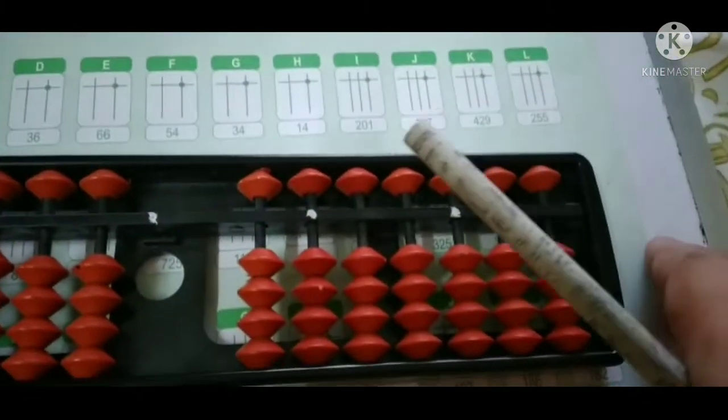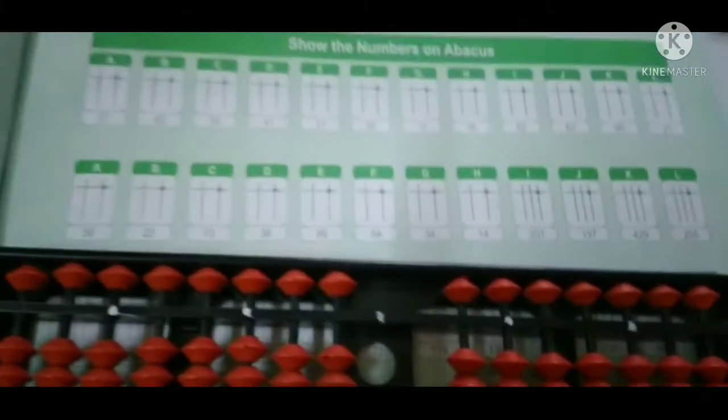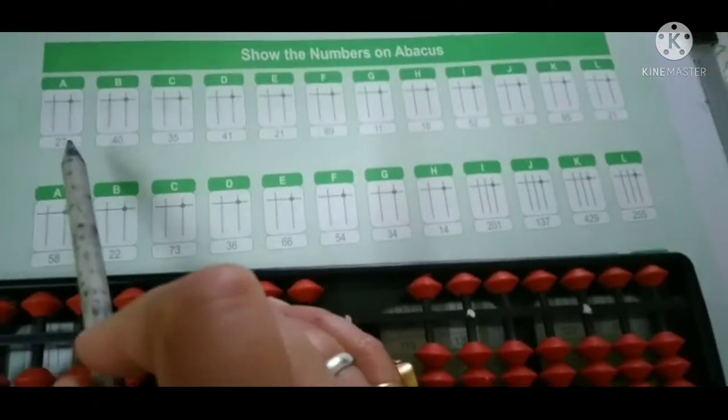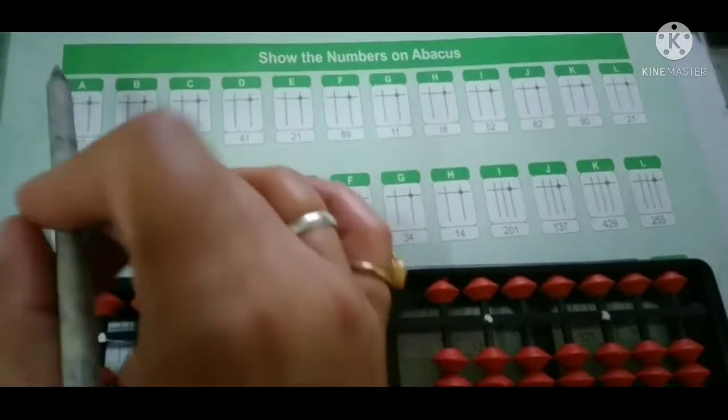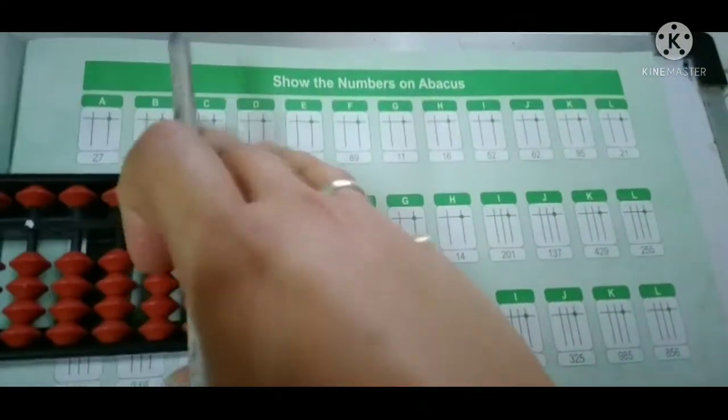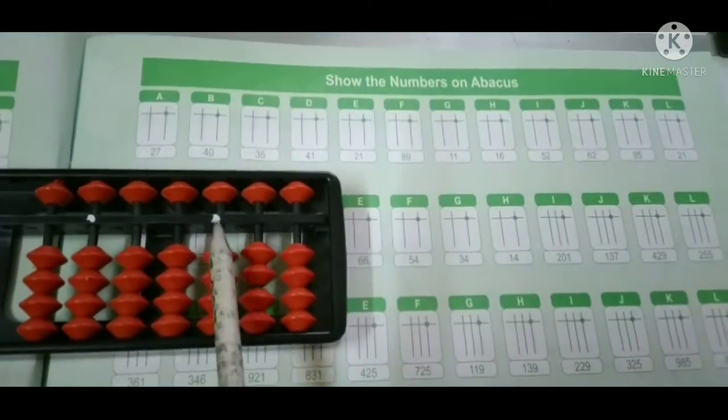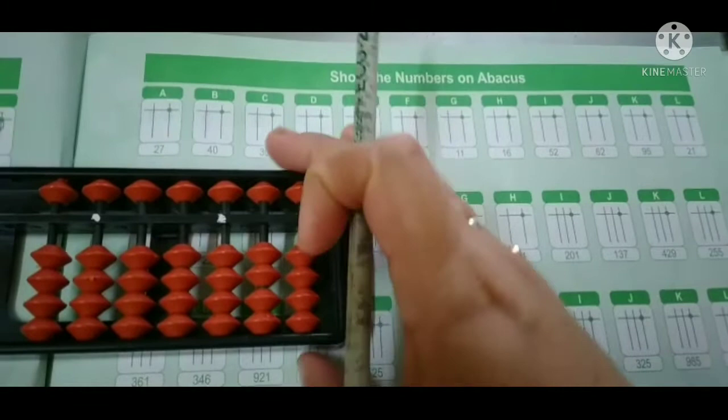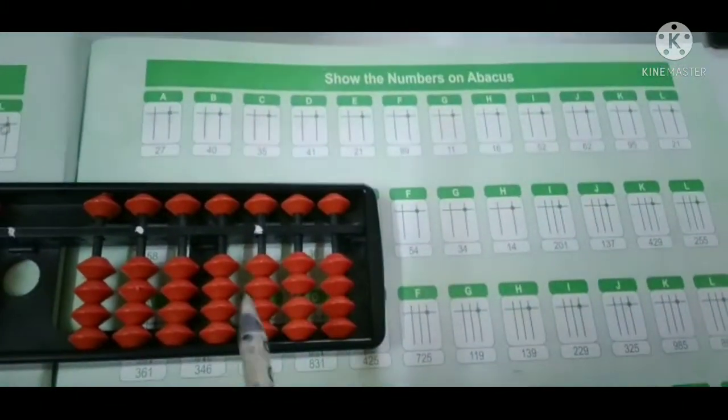So without wasting time let's start. First it is written here that's 27. This is the middle one you can see here. How will you write and show this 27 on the abacus?